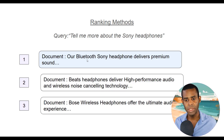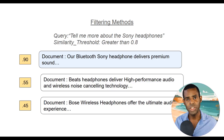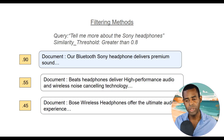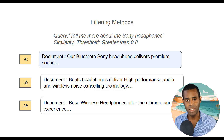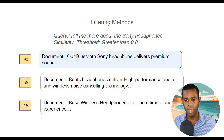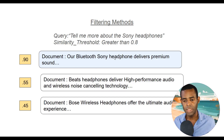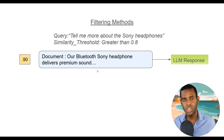Filtering methods are related to ranking in that we're trying to bring the best information up first. With filtering, we also calculate a relevancy score based on the question and the documents, then filter out any documents that don't meet a certain similarity threshold. For example, if we ranked the first document as 0.9 and the rest as 0.55 and 0.54, with a similarity threshold of greater than 0.8, the bottom two documents would get filtered out. Only the first document would go to our LLM response. These are two really powerful methods to provide your LLM the best possible information.